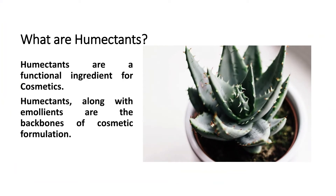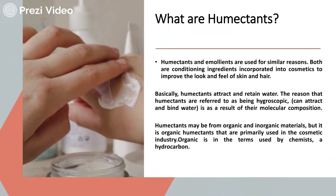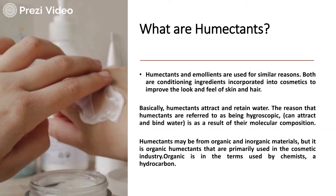So what are humectants basically? Humectants are the functional ingredients for cosmetics. They are one of the most vital cosmetic ingredients used. Along with emollients, they are basically the backbones for cosmetic formulations. The basic property of humectants and emollients is that they are conditioning agents used in cosmetics to improve the look and feel of the skin and hair. They have excellent properties to retain moisture. Humectants attract and retain this moisture, which is why they are referred to as being hygroscopic.